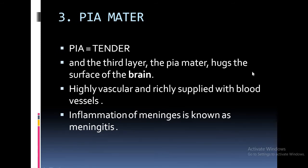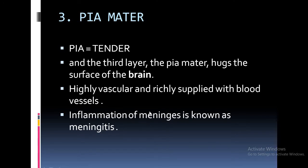The third or innermost layer is the pia mater. 'Pia' means tender or soft. It hugs the surface of the brain, meaning it is in direct contact with the brain. It is highly vascular and richly supplied with blood vessels, which helps provide nutrition to the brain.